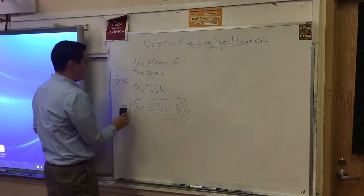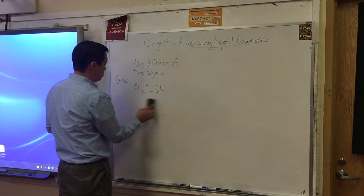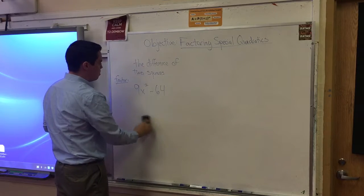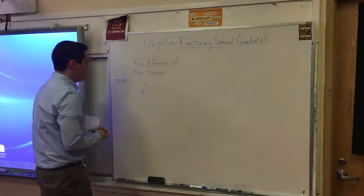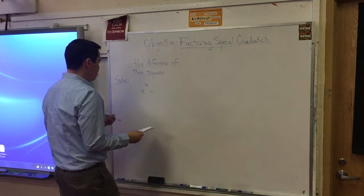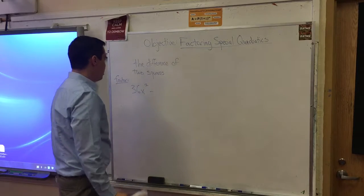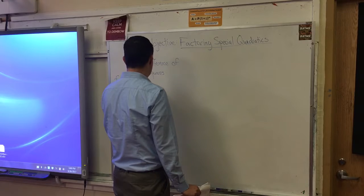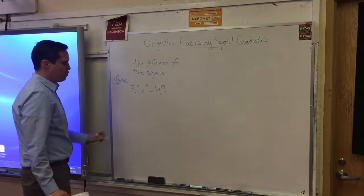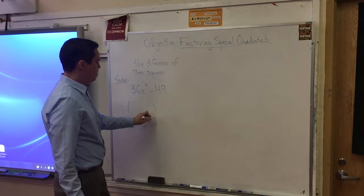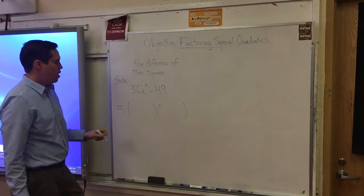Another example of difference of two squares. You really can just do anything that's a perfect square. Let's do 36 and 49. 36x squared minus 49. We could rewrite that in a factored form because this is a perfect square.